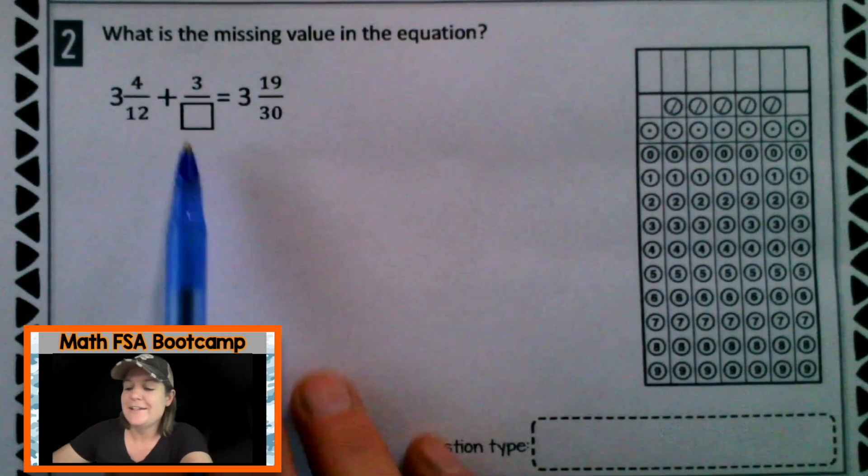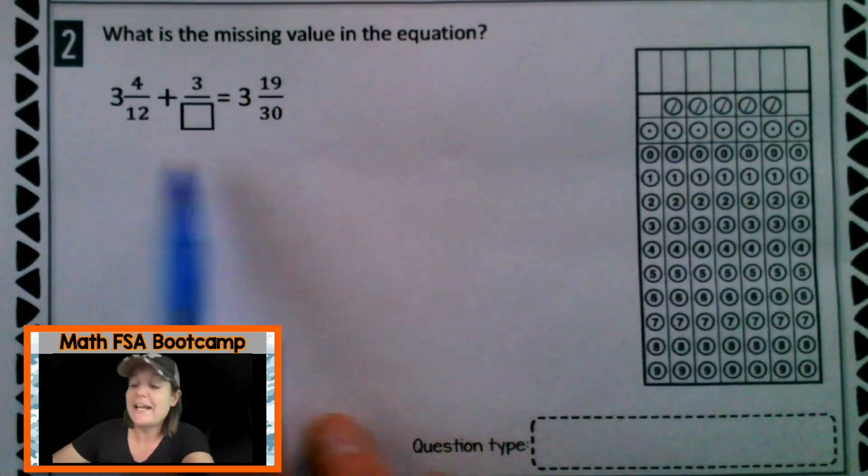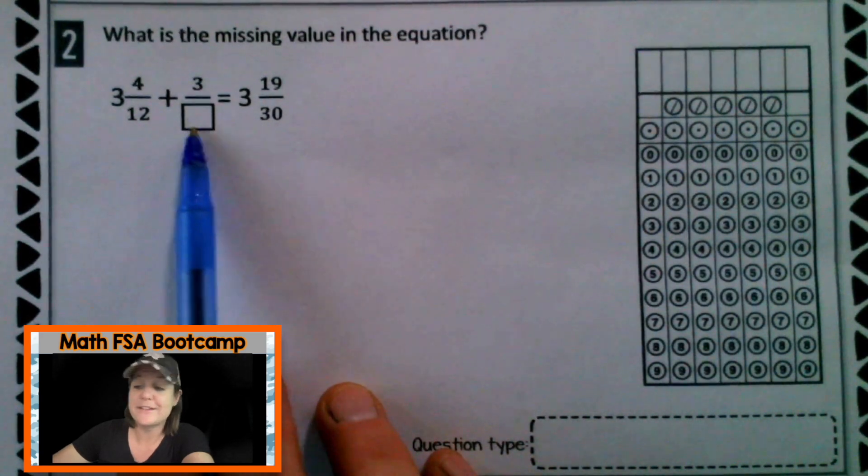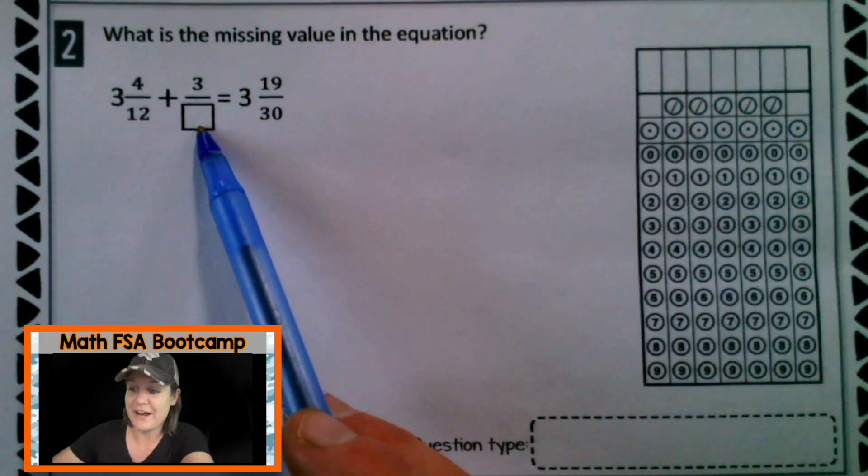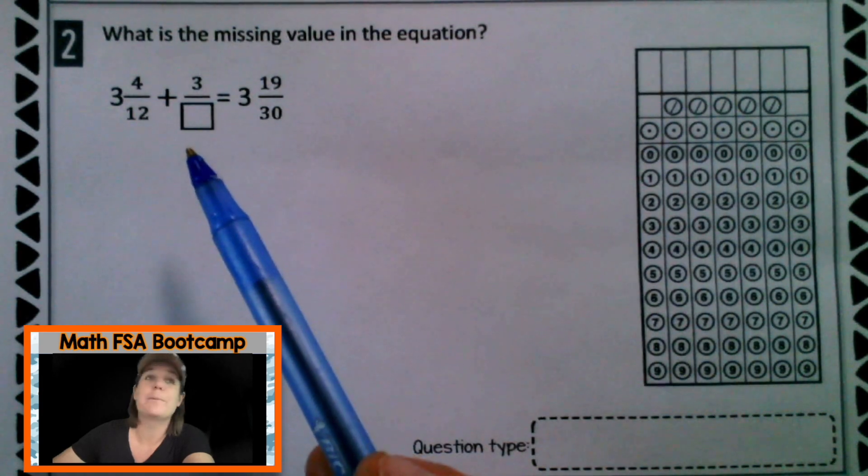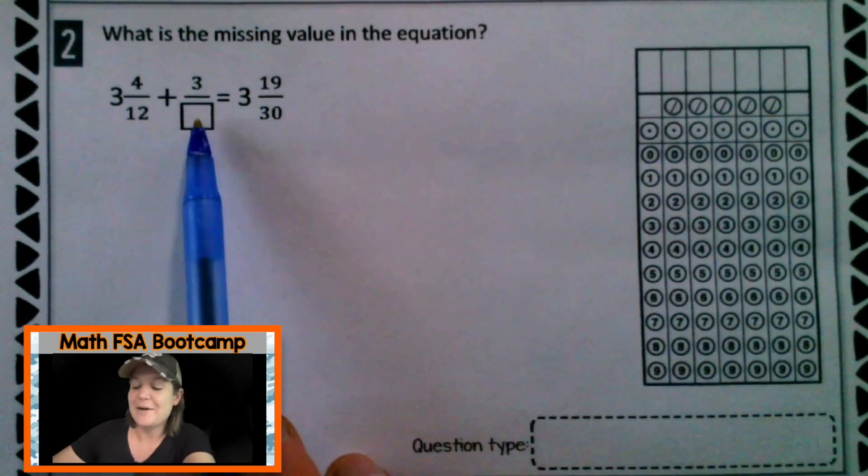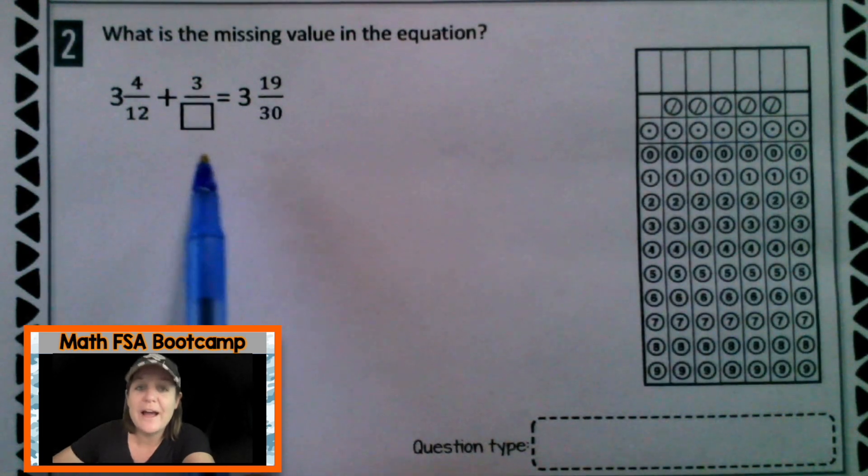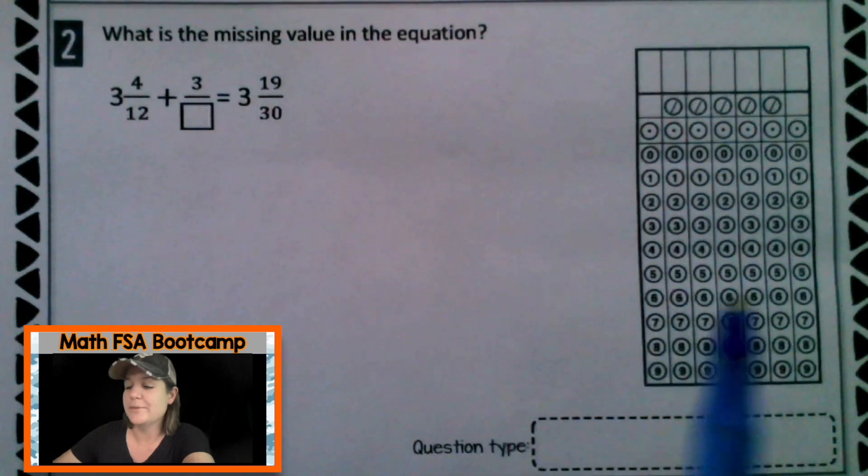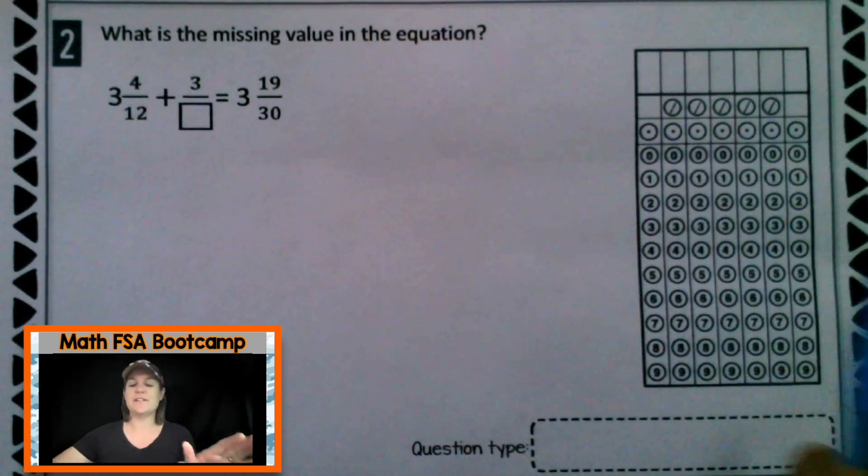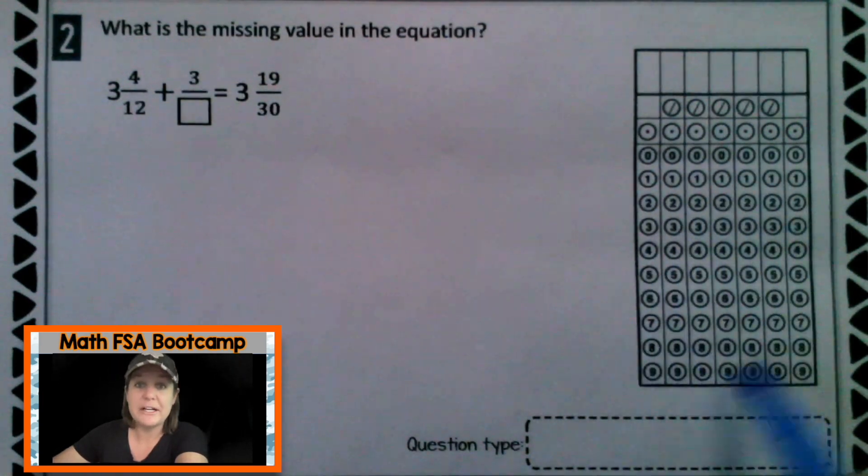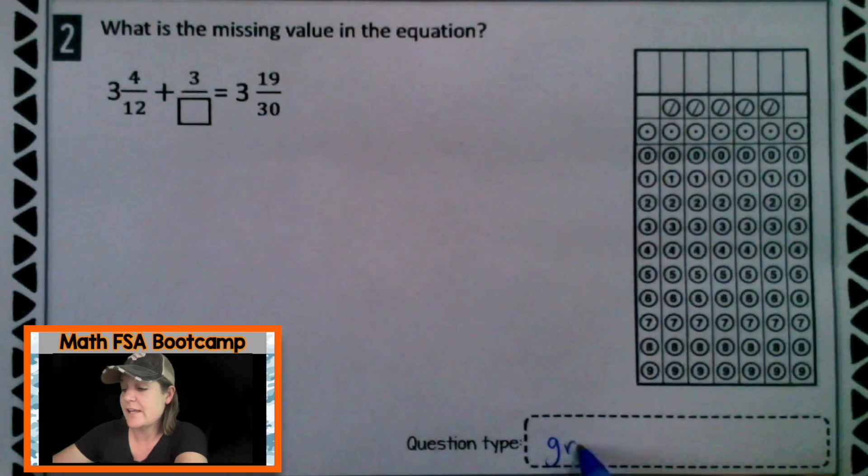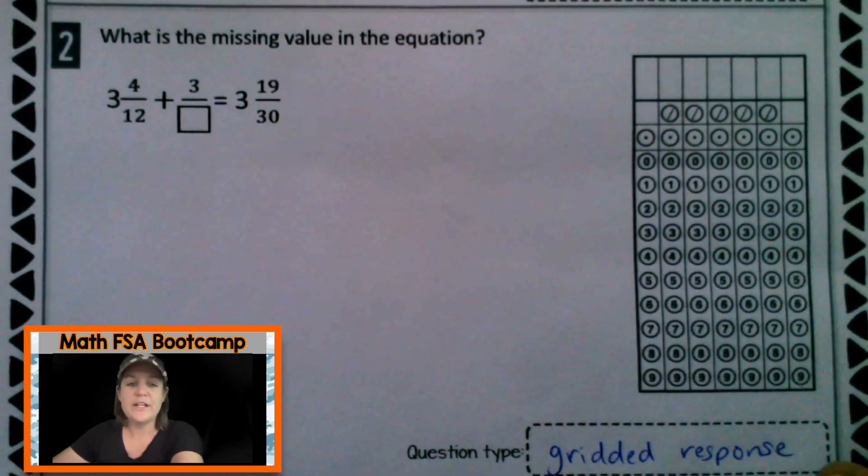All right. Number two. I'm noticing right away, I recognize this type of question where there's a missing value right there. And this is one that students are terrified of. These can be kind of difficult to do at first, but once you know a strategy, you can make it work. There's two different ways to approach it, but I'm getting ahead of myself. That's because I'm really excited about this question. I actually love these because they're like a puzzle to figure out. That's why I love math. What question type is this? Well, we see the grid that we need to bubble in at the end. So that means that this is a gridded response.